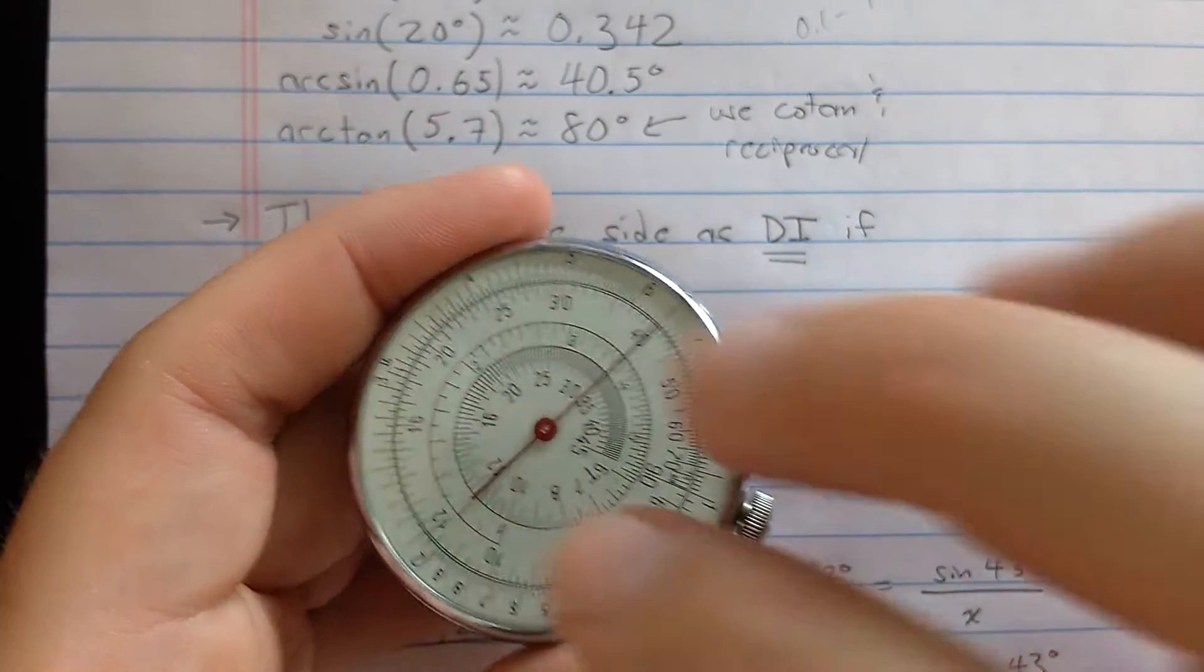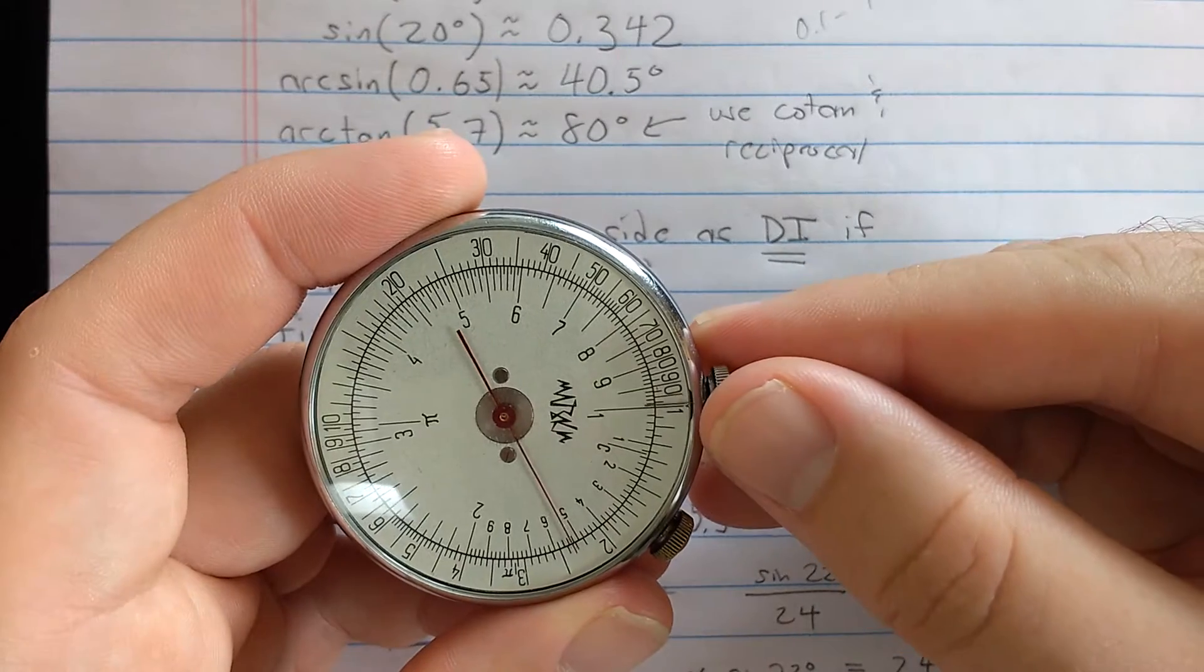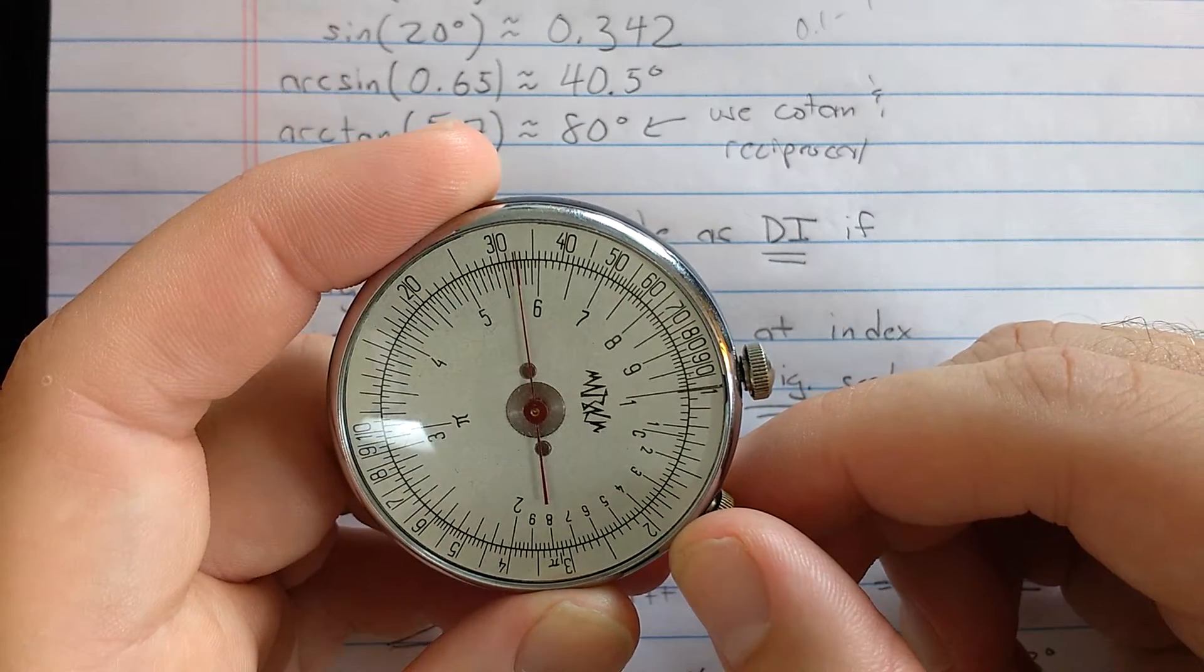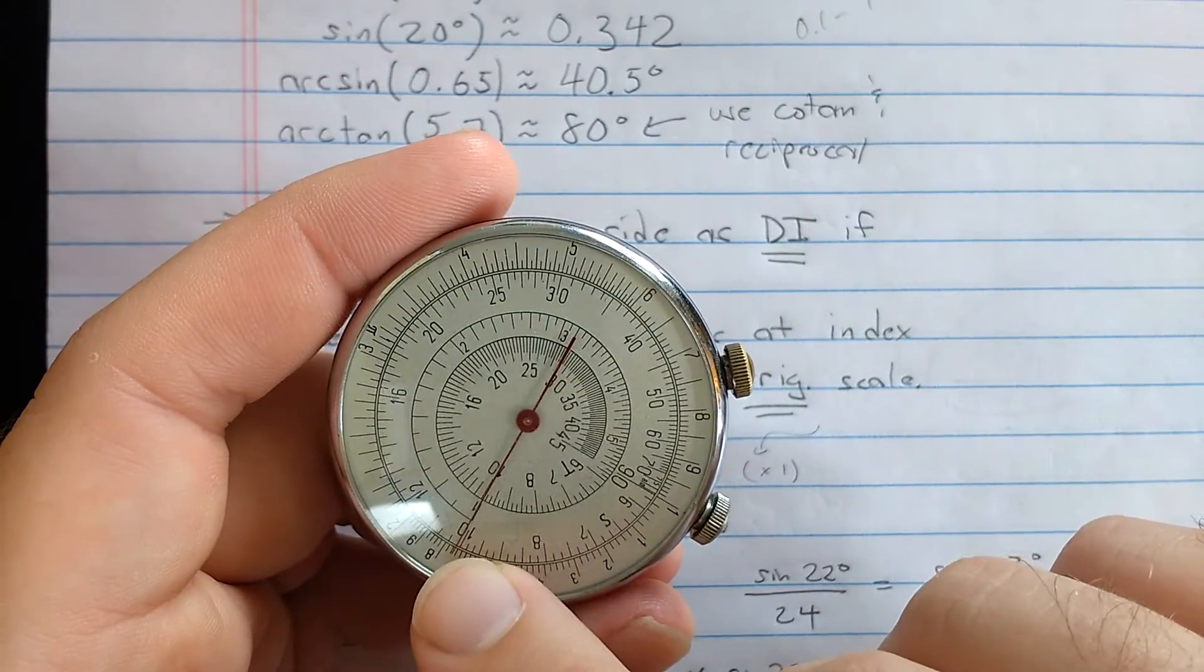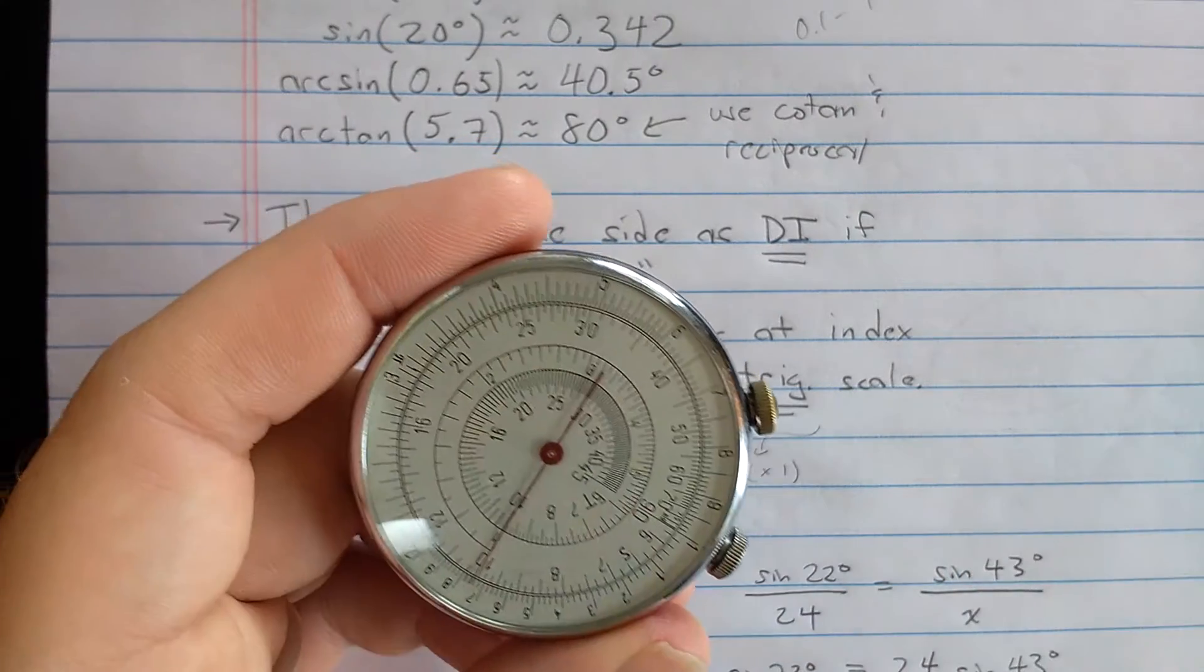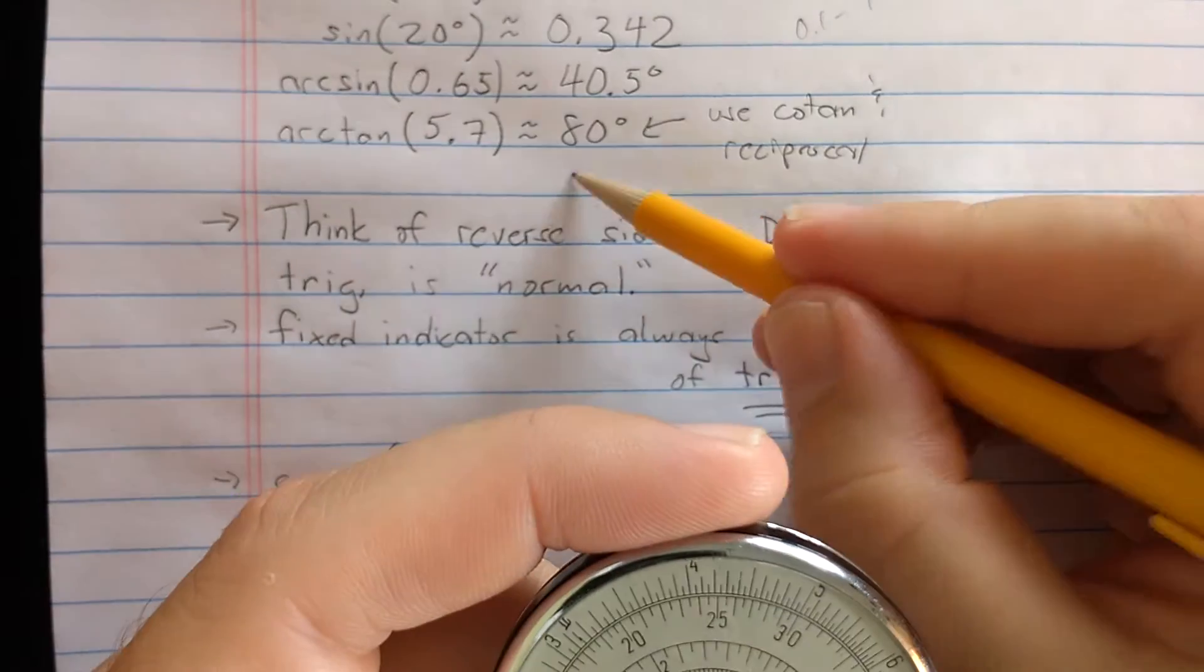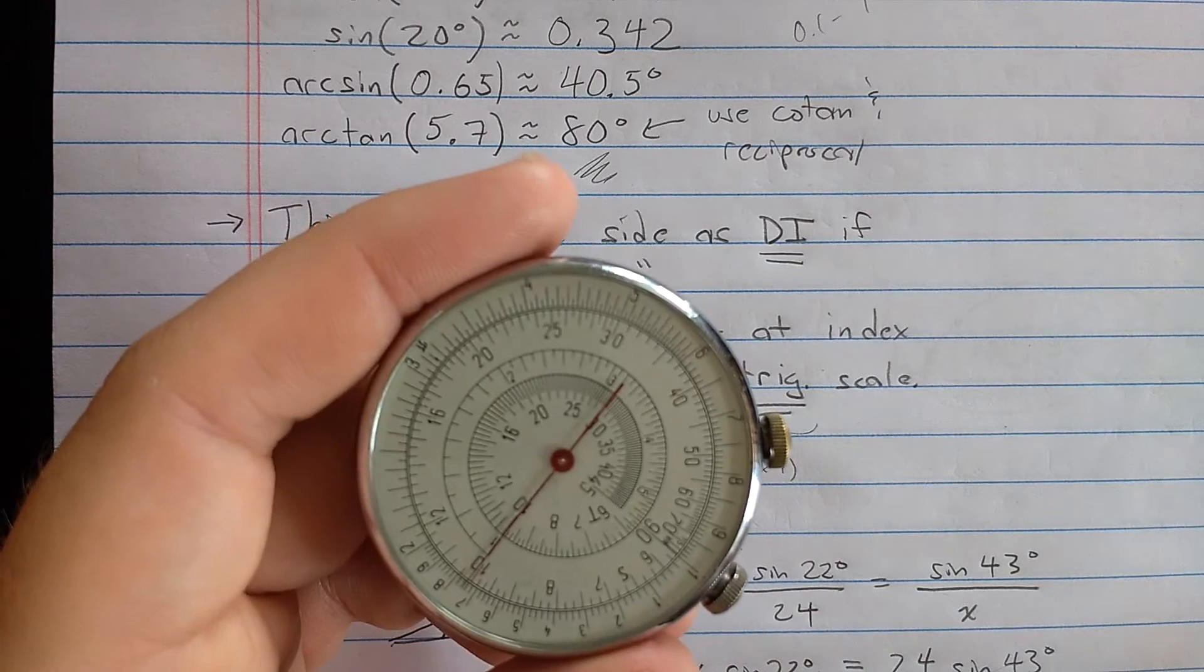I'm going to take the reciprocal of 5.7. To do that, I need to make sure this side is closed. So I found the 1 there, then I'm going to find 5.7 on the front side. It's closed. So then when I flip, the reciprocal is reading here on the outer scale. Then I look at the tangent scale. I see about 10 degrees. What I computed there is the cotangent, so what I really want is 80 degrees, switching back to the tangent.